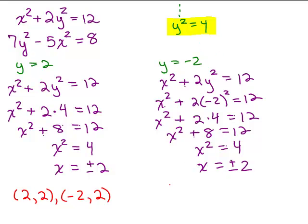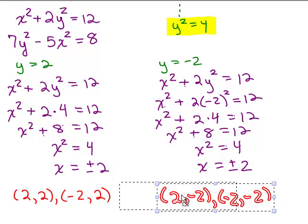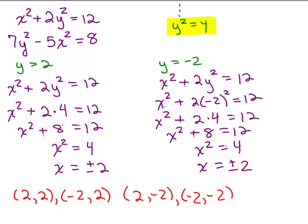But this is when I let y equal negative 2. So my two solutions here: when y is negative 2, I got 2 for x, and when y is negative 2, I also got negative 2 for x. So I get 4 solutions. We could put those together.